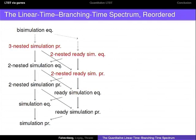The interesting thing is that this game can be modified in different ways to explain all the relations in the spectrum. Here the spectrum is slightly reordered and there are some new relations in it too. What I was playing was the simulation pre-order game. We can also play a bisimulation game. To go up the hierarchy one step at a time: if we wanted to play a simulation equivalence game, we let player one choose in the beginning which state to play from — either from S or from T. This is the simulation equivalence game.